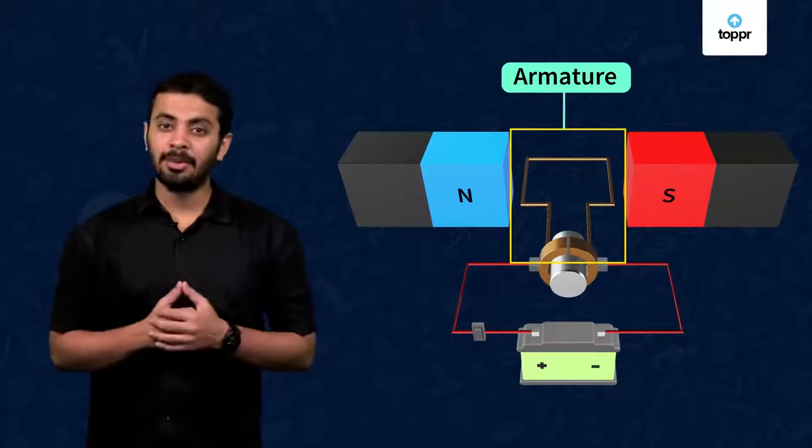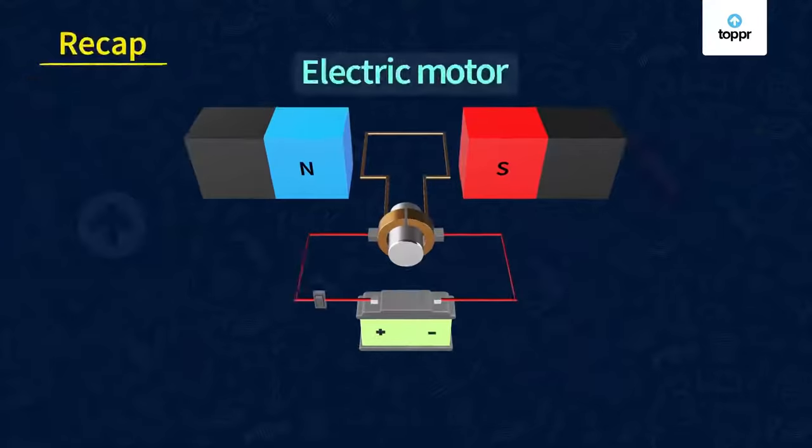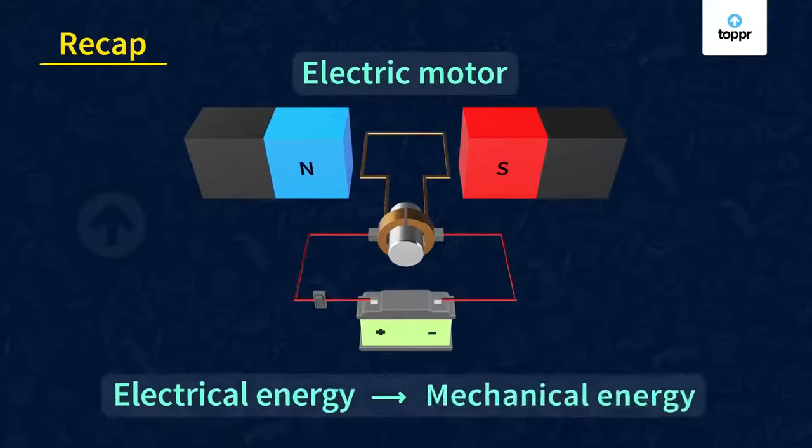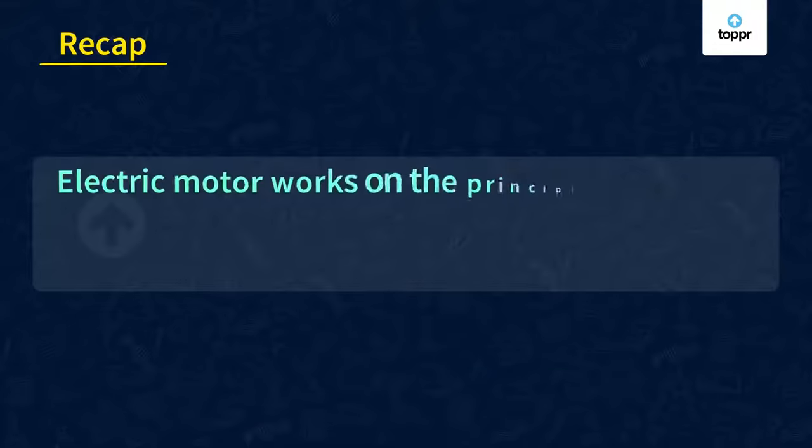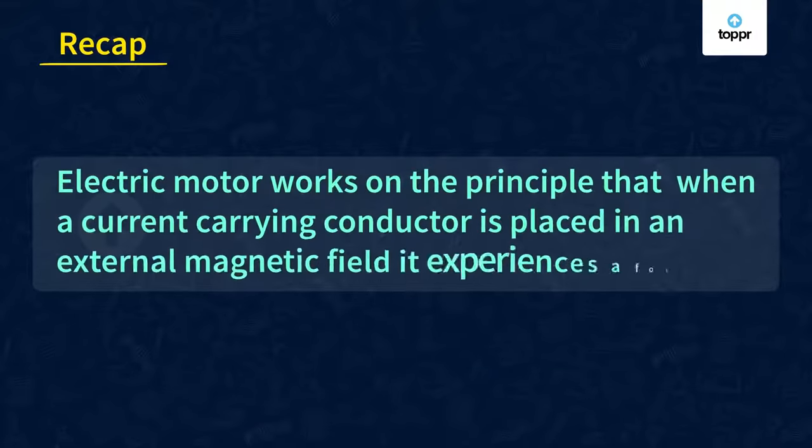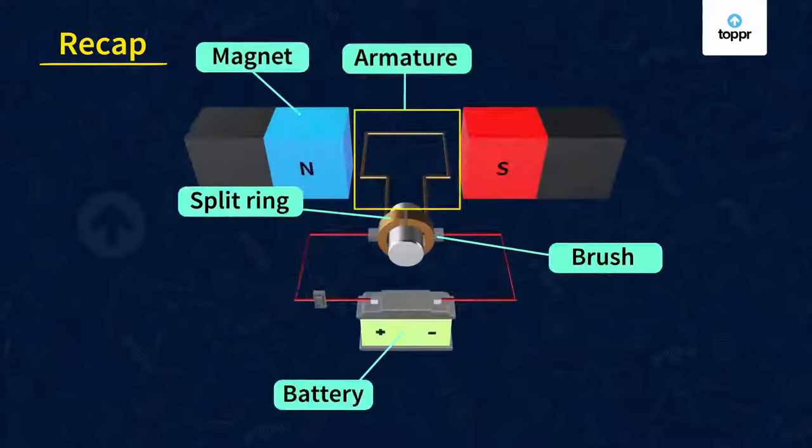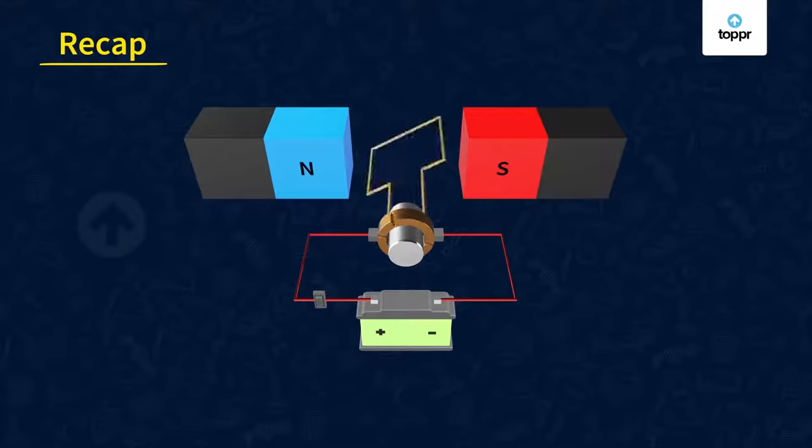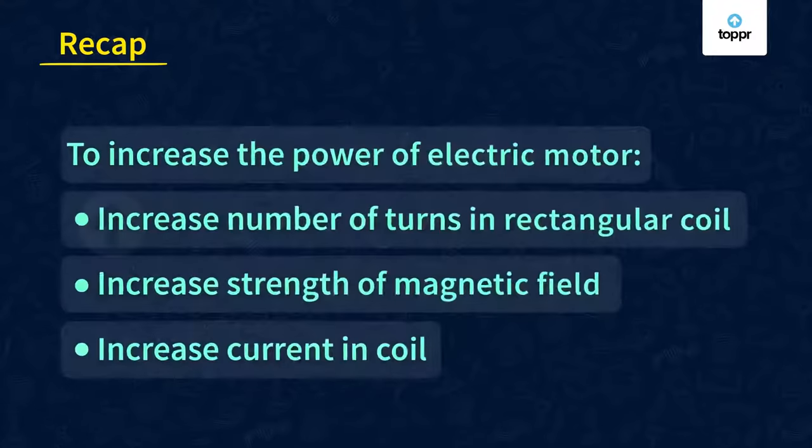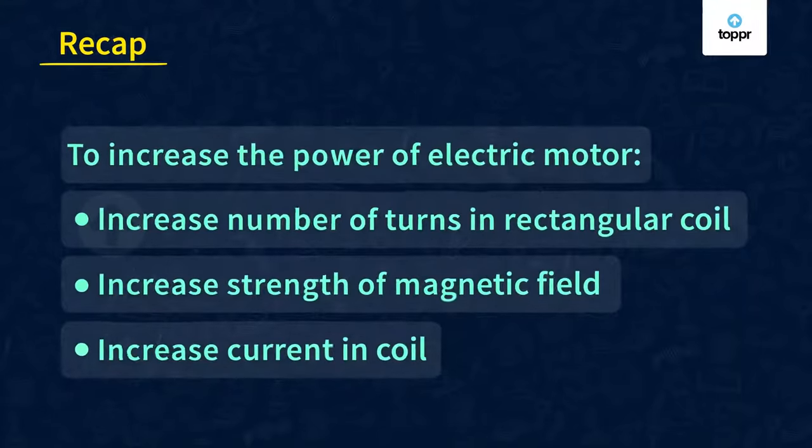That's all for today. Let's quickly wrap up what we have learned. The electric motor is a device which converts electrical energy into mechanical energy. The electric motor works on the principle that when a current carrying conductor is placed in an external magnetic field, it experiences a force. We saw the important parts in the construction of an electric motor. And its working like how it converts electrical energy into mechanical energy. And we have also seen how the power of an electric motor can be increased. Hope you got to learn new and interesting things today. See you soon in our next session. Keep learning.